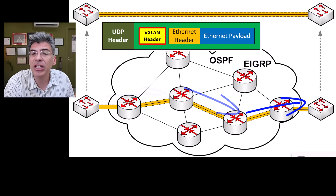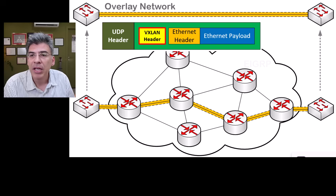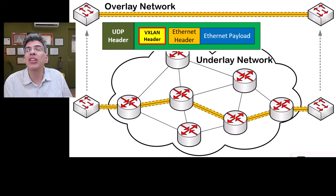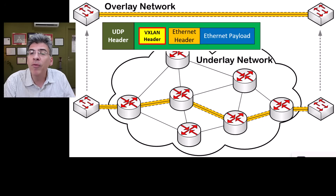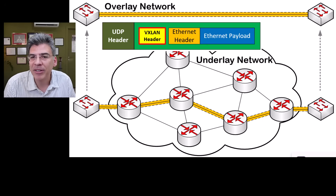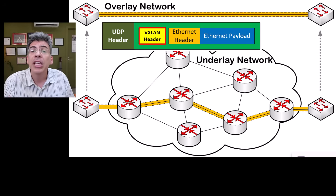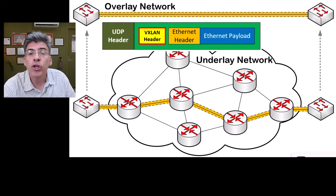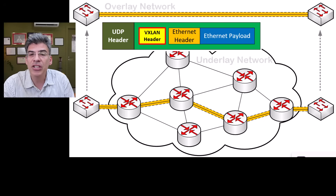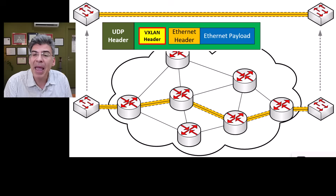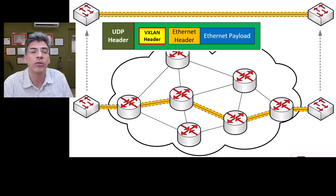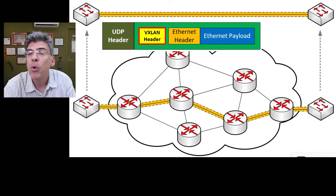The overlay and underlay networks essentially operate independently. The overlay network is virtual and it depends on the underlay network, but modifications in the overlay network do not impact the underlay network. You can add or remove links in the underlay network as long as your routing protocol can reach the destination, and the overlay network will remain unaffected. By doing so, VXLAN essentially provides the flexibility to span virtual networks across different physical locations, making it easier to manage and move virtual machines without being constrained by the physical network topology.